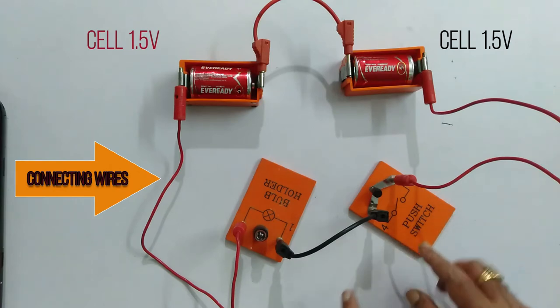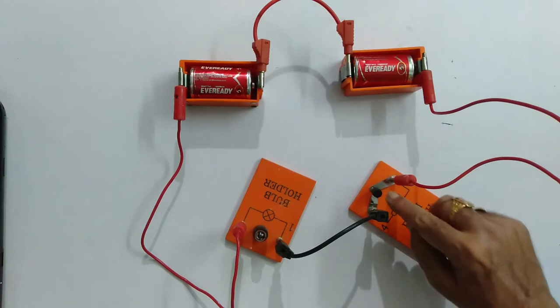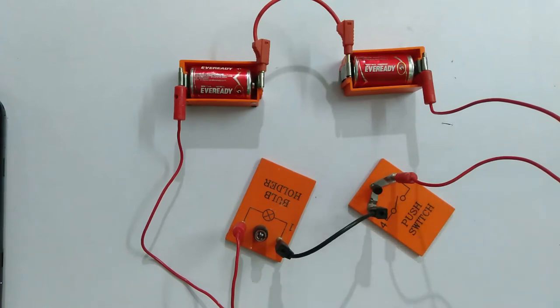Why? Because the circuit is not completed. When I push the switch, the bulb will glow. Two cells, one bulb and then one switch.